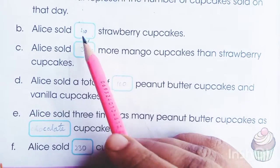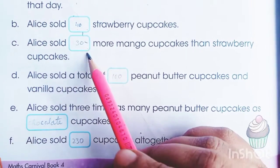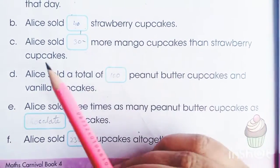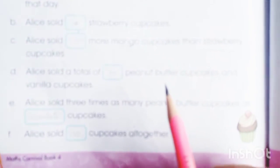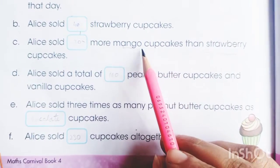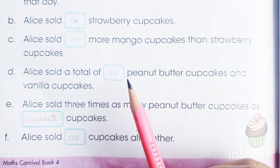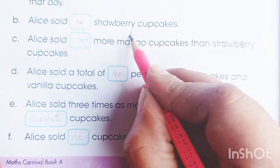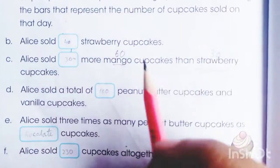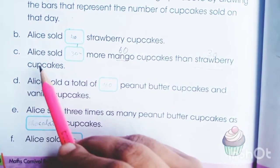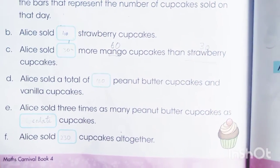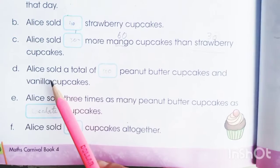We have written 40 for strawberry. The question asks how many more mango cupcakes than strawberry cupcakes were sold. For comparison, we will find the difference of mango and strawberry. Mango is 60 and strawberry is 40, so the difference is 30. Mango cupcakes are 30 more than strawberry.